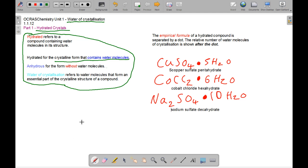Water of crystallization refers to water molecules that form a part of the crystalline structure of the compound. The empirical formula of a hydrated compound is separated by a dot. The number of water molecules of crystallization is shown after the dot.